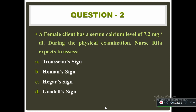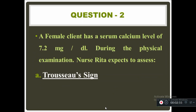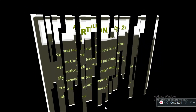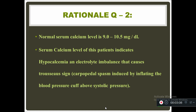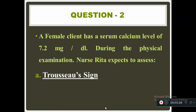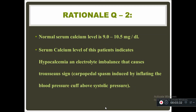Question two: a female client has a serum calcium level of 7.2 mg per deciliter. During the physical examination, nurse Rita expects to assess — Trousseau sign, Homans sign, Hader sign, or Goodwill sign. The answer is Trousseau sign. First, we need to know the normal serum calcium level, which is between 9.0 to 10.5 mg per deciliter. This patient's calcium level of 7.2 mg per deciliter indicates hypocalcemia.